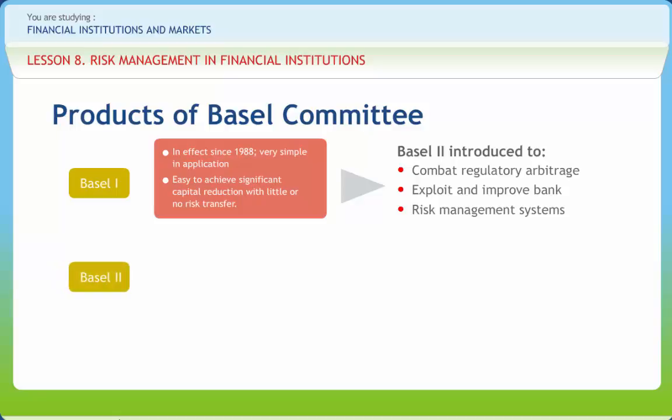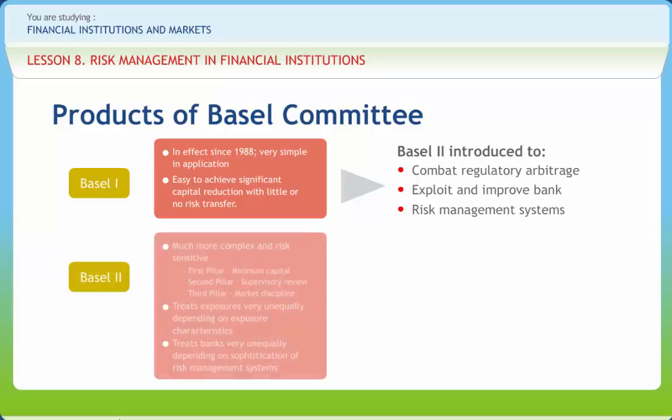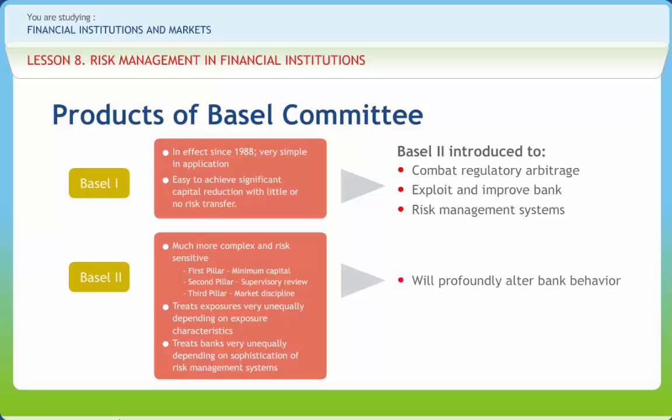Basel consists of three pillars. The first pillar is minimum capital, the second pillar is supervisory review, and the third pillar is market discipline. Basel 2 treats exposures very unequally depending on exposure characteristics, and also treats banks very unequally depending on sophistication of risk management systems. Basel 1's adaptation and implementation occurred rather smoothly in the Basel Committee states.